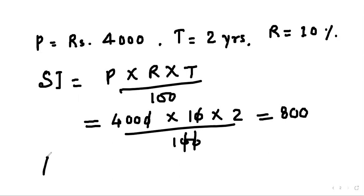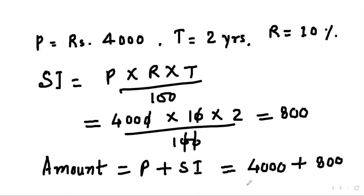Now suppose we want to find out the amount. Amount equals principal plus simple interest. So we write: principal 4000 plus interest 800. The total is rupees 4800.